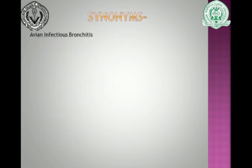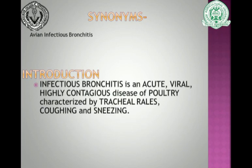This disease is also known as avian infectious bronchitis, as it occurs in poultry. Infectious bronchitis is an acute, viral, highly contagious disease of poultry, characterized by tracheal rales, coughing, and sneezing. These three clinical signs indicate that this virus primarily targets the respiratory tract.